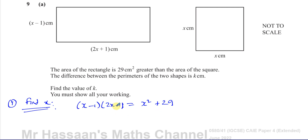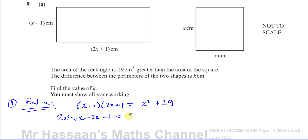I need to expand the brackets. X times 2X is 2X squared, X times 1 is X, minus 1 times 2X is minus 2X, and minus 1 times plus 1 is minus 1. That equals X squared plus 29.